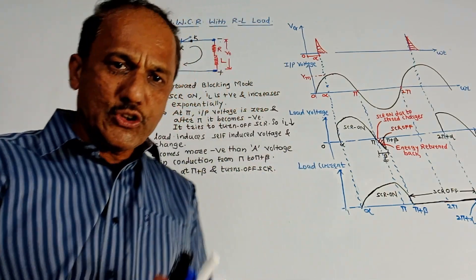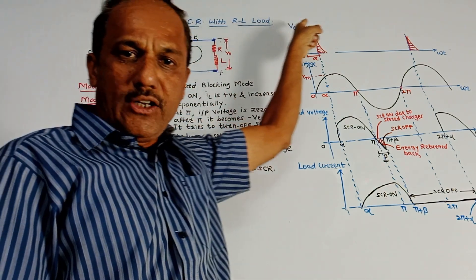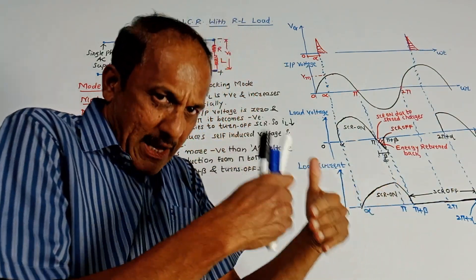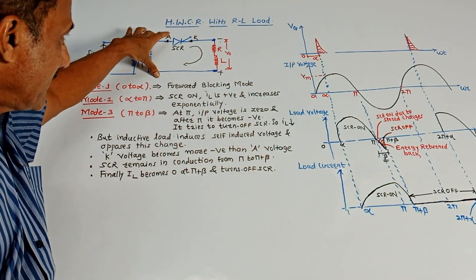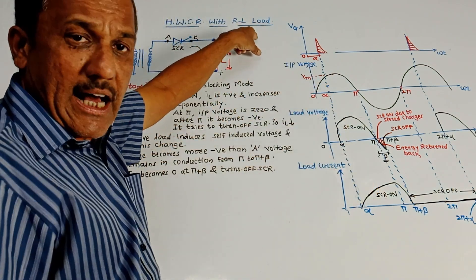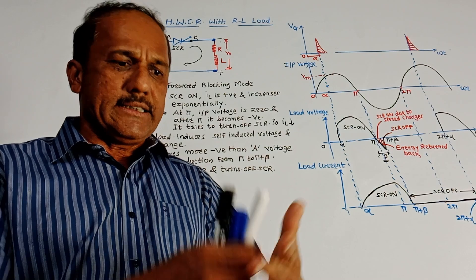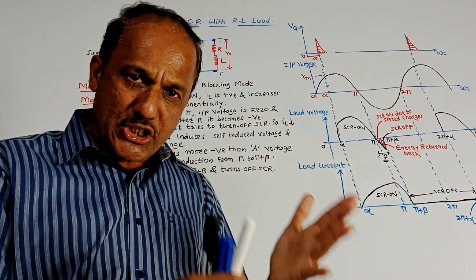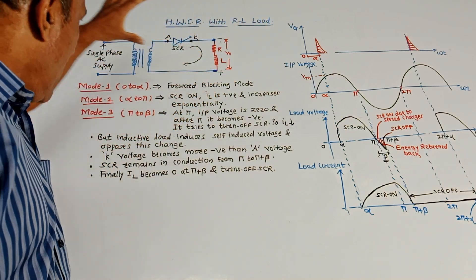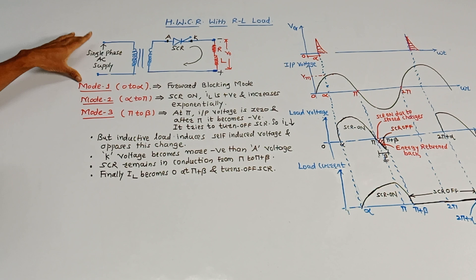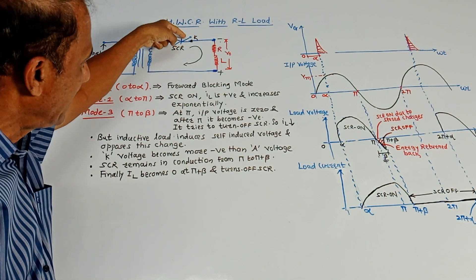Hello and welcome back to this channel. Today's topic is HWCR, that is Half Wave Controlled Rectifier with RL load. The half wave controlled rectifier with R load we have already discussed. This is the related circuit diagram and corresponding waveforms. We are going to apply single phase AC supply at the input side. This is the transformer, this is the symbol of SCR — anode terminal, cathode terminal, and this one is the gate terminal.